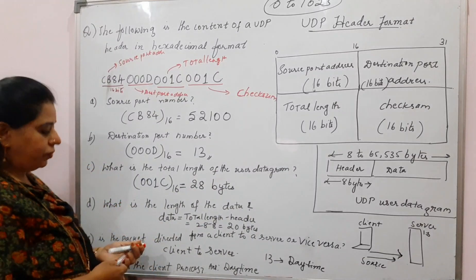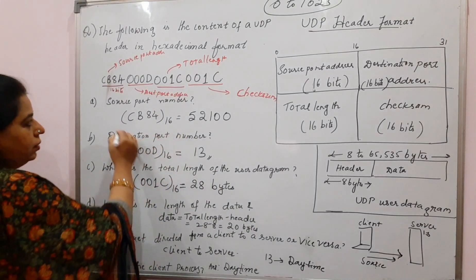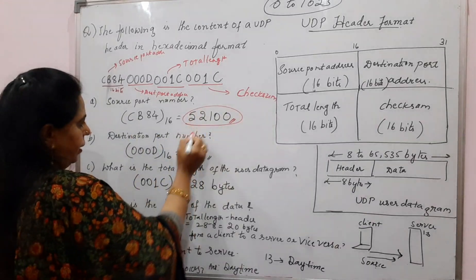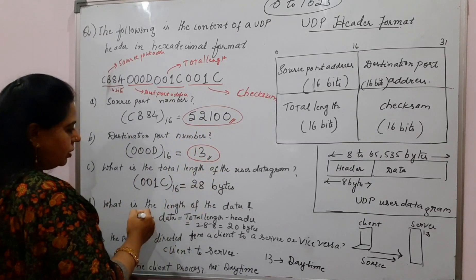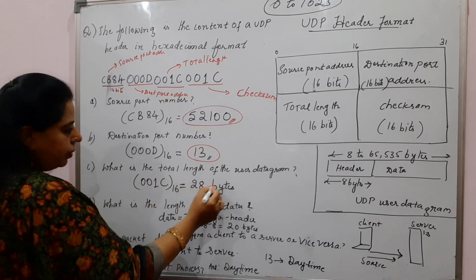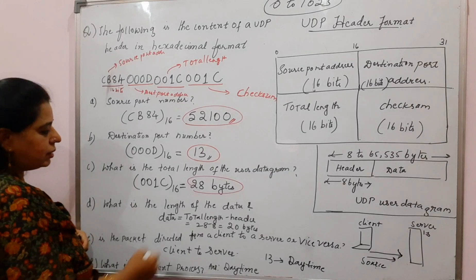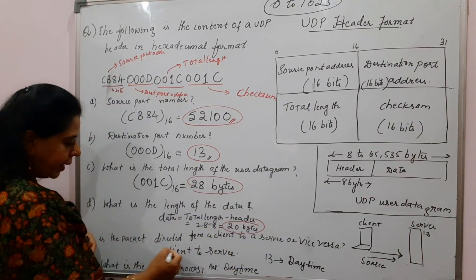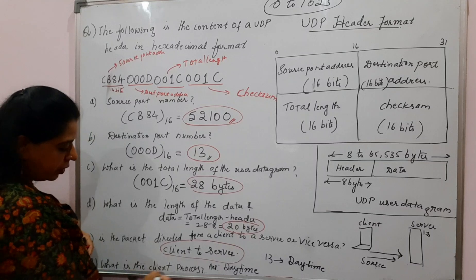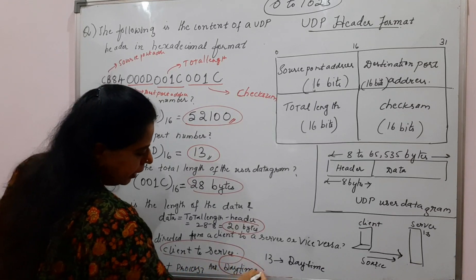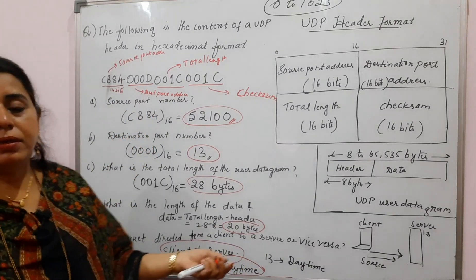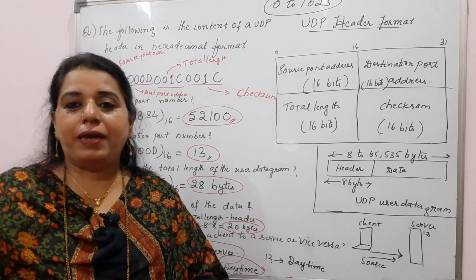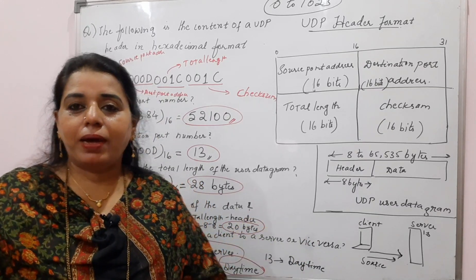So this is how you solve this type of numerical. The source port number is 52,100; the destination port number is 13, which is a well-known port number; the total length of the user datagram is 28 bytes; the length of the data is 20 bytes; and the packet is directed from the client to the server. The server process is daytime. Just remember the fields and you will be able to answer — even for 4 to 5 marks.